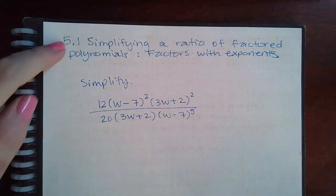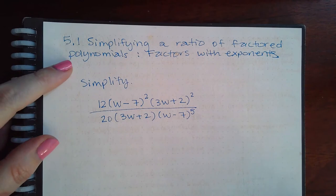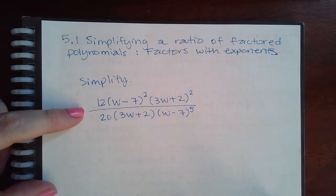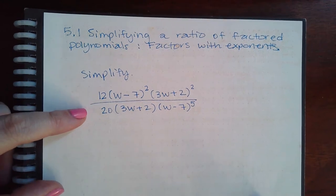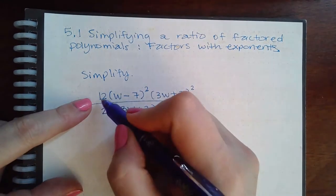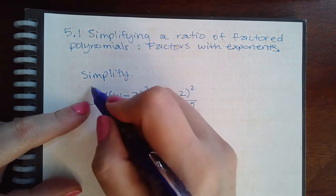Okay, we are with 5.1 simplifying a ratio of factored polynomials, factors with exponents. So we've got to simplify this fraction and we can simplify the numbers as we usually do. So I can divide both of these by four.